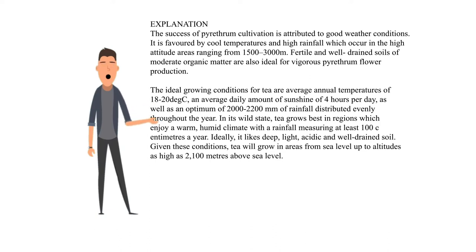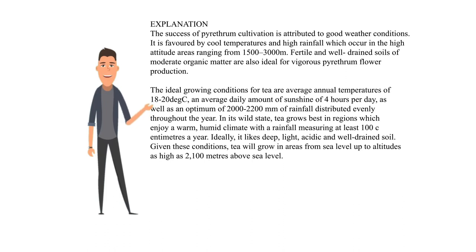The ideal growing conditions for tea are average annual temperatures of 18 to 20 degrees Celsius, an average daily amount of sunshine of 4 hours per day, as well as an optimum of 2000 to 2200 millimeters of rainfall distributed evenly throughout the year. In its wild state, tea grows best in regions which enjoy a warm, humid climate with rainfall measuring at least 100 centimeters a year. Ideally, it likes deep, light, acidic, and well-drained soil. Tea will grow in areas from sea level up to altitudes as high as 2100 meters above sea level.